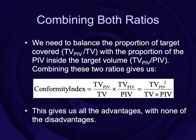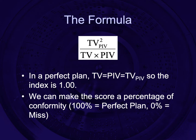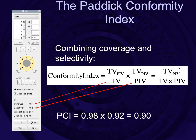But if we combine both ratios together we get all of the advantages with none of the disadvantages. With the treatment plan we're trying to balance the proportion of target covered with the proportion of spillage outside the target. For a perfect plan, the target volume equals the prescription isodose volume, so the index is 1. We can make the score a percentage: 100% is a perfect plan and 0% is a miss. It's very easy to calculate using GammaPlan — we automatically get coverage and selectivity and simply multiply those two values together. In this case the Paddock conformity index gives a score of 0.90.